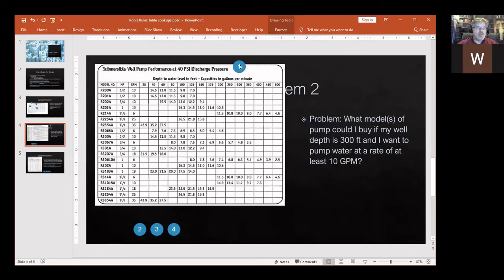At the top of the table I'm reading submersible well pump performance at 40 psi discharge pressure and right below that it tells me depth to water in feet, capacity in gallons per minute. Does that match the data that I'm looking for? Yes it does.